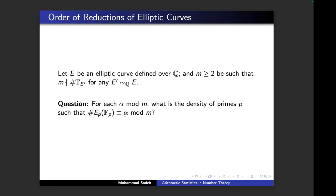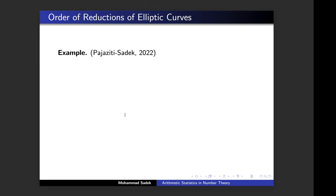Pick m to be any integer not in Mazur's list, and α any congruence class. Arithmetic statistics is offering an approach to find the proportion of such elliptic curves. Let me give a starting example. One of my students and I came up with several families of elliptic curves — that's one of them. It's not only one elliptic curve but a family: change t to any rational number and you get an elliptic curve.